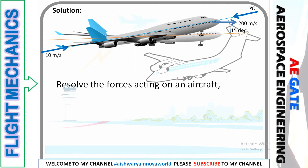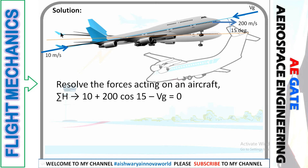We resolve the forces on the horizontal. We get plus 10 because the arrowhead is towards the right — right side direction is positive and left side is negative. Plus the TAS is inclined at 15 degrees, so when you resolve this force it comes as 200 cos 15 degrees. Minus Vg, because it is directed towards the left, equals zero.